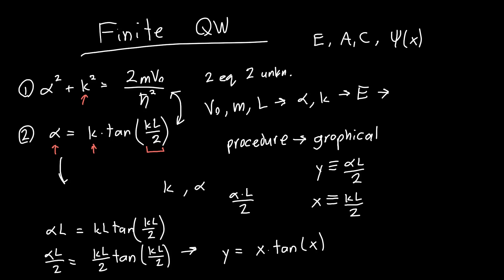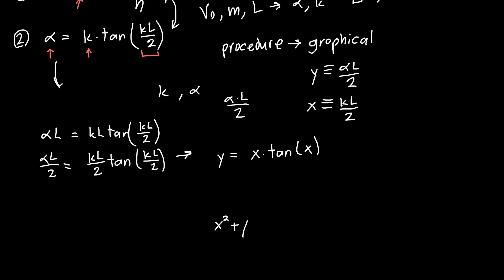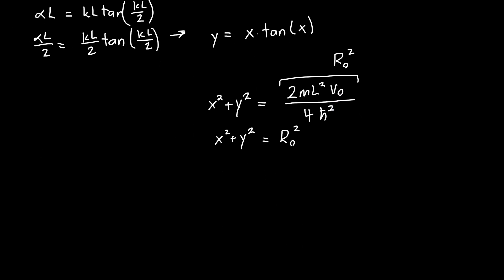And if we make the same substitutions in the first equation, we'll get that x squared plus y squared is equal to 2m L squared V naught over 4 h bar squared. And I'm also going to make the substitution that this I'm going to call R naught squared. So we've got x squared plus y squared is equal to R naught squared. So now we've got two beautiful equations. Y is equal to x times tangent of x, and x squared plus y squared is equal to R naught squared.